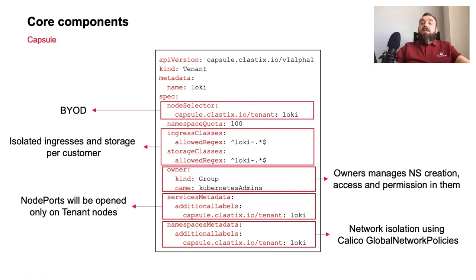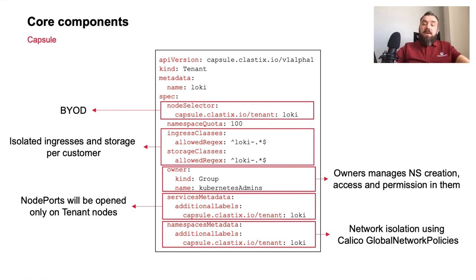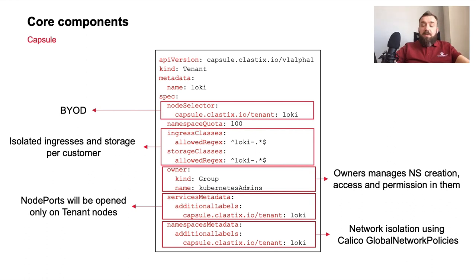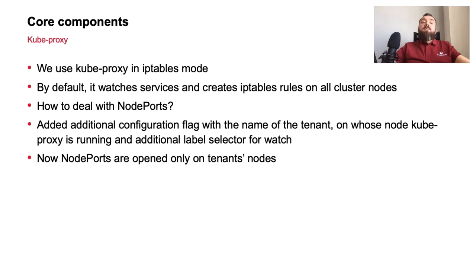Another feature we get is additional self-service capabilities. Our customers are always mapped to a dedicated LDAP group, and when a customer creates a tenant we assign their group as a tenant owner, so they can manage everything inside their tenant without any help from cluster administrators. The last feature is isolation — Capsule has the ability to assign specific labels or annotations to tenant namespaces and tenant services. Namespace labels are used to achieve network isolation with Calico global network policies, so our tenants are always isolated from each other. With labels on services, we are able to make NodePorts open only on the tenant nodes.